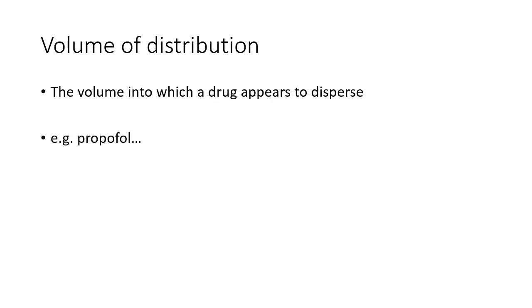Let's start with volume of distribution. This can be defined simply as the volume into which a drug appears to disperse, the key word being appears. For example, propofol has a very large volume of distribution, about 4 litres per kilogram body weight, or almost 300 litres for a normal-sized adult. That is clearly well in excess of the volume of the average adult.